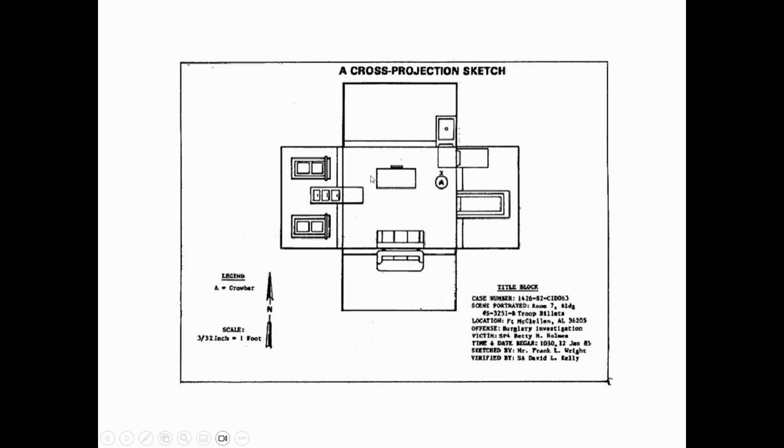So this cross projection sketch, it's like if you had a house and cut the walls and laid them out flat. You have a bird's eye view here in the center portion, and then you can see the windows to the room, the door, maybe a sink and couch, some sort of drawer. We have a legend, a scale, directionality, and information about the crime scene.